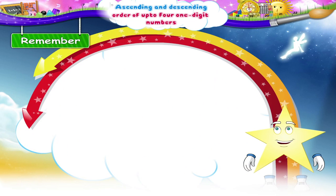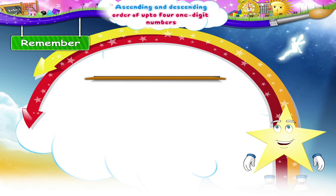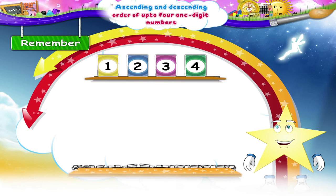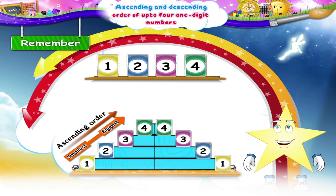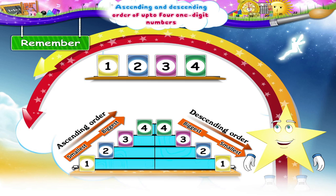Remember, Starry? Ascending order means you arrange numbers from the smallest to the biggest number. Descending order means from the biggest to the smallest number.